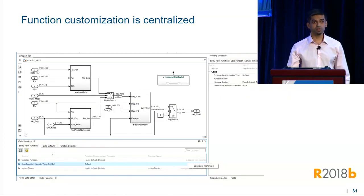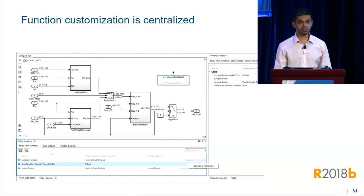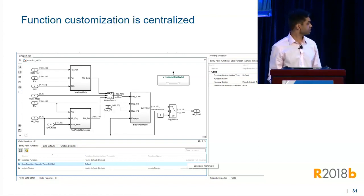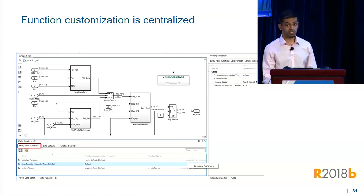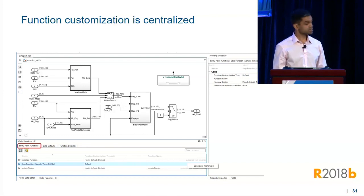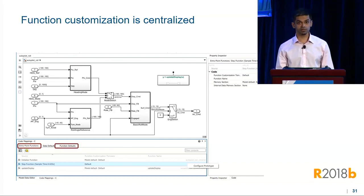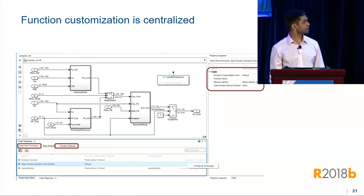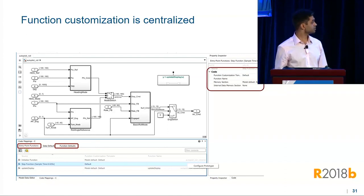In 18B, we also added function customization to the code perspective. Now, in a single place, you can customize all of your entry point functions. This includes simulink functions, your step functions, and so on. Additionally, you can also customize function defaults, and for each function you can customize each property in the property inspector.